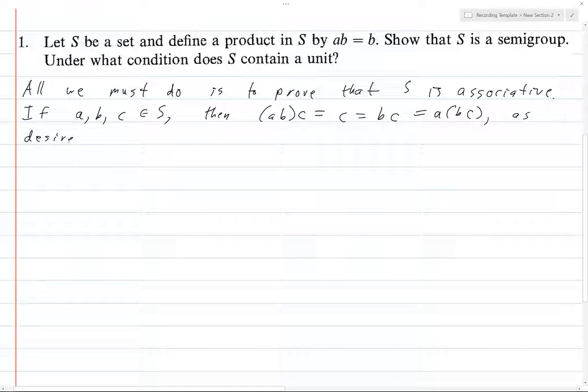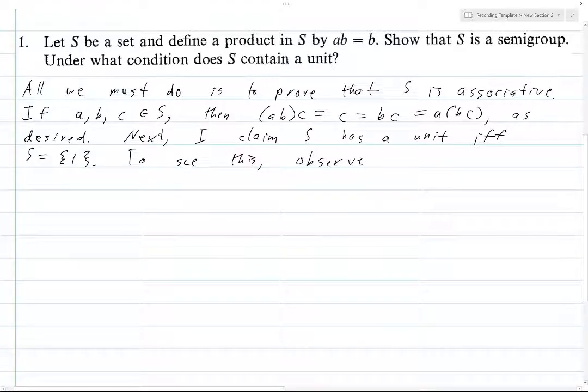Next, I claim S has a unit if and only if S equals just—it contains only the element one. To see this, observe that if S contains one and we have some element a which is not one, then...